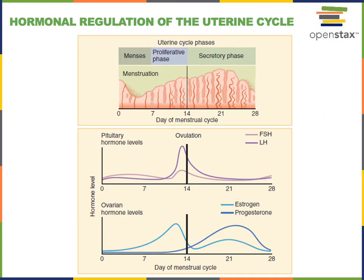The uterine cycle is a roughly 28-day cycle corresponding to hormonal fluctuations over the ovarian cycle. During the follicular phase of the ovarian cycle, follicle stimulating hormone stimulates ovarian follicles to produce estrogen. Estrogen then stimulates proliferation of the stratum functionalis in the endometrium — this phase of the uterine cycle is known as the proliferative phase.